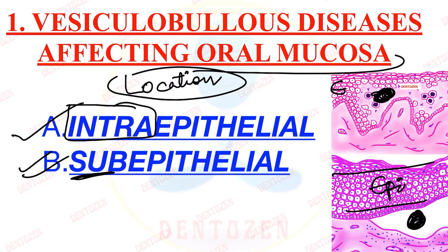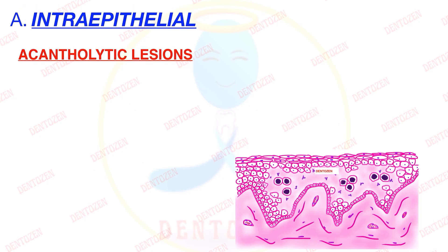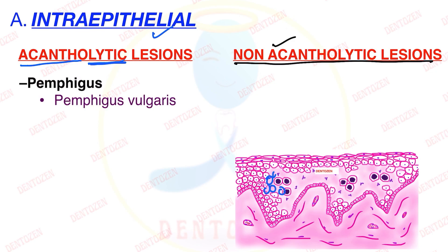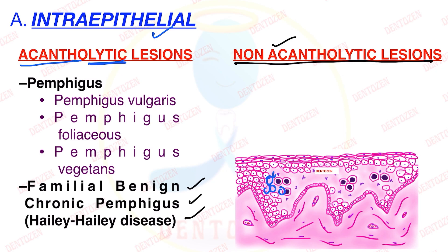Now let's look at examples one by one. In intraepithelial lesions, sometimes there is destruction of epithelial cells, particularly at the stratum spinosum level — these are called acantholytic lesions. 'Lytic' means destruction, and 'acantha' refers to the stratum spinosum. If cells break apart, they are acantholytic. Examples of acantholytic diseases include pemphigus vulgaris, pemphigus foliaceus, pemphigus vegetans, familial benign chronic pemphigus (Hailey-Hailey disease), and Darier's disease.